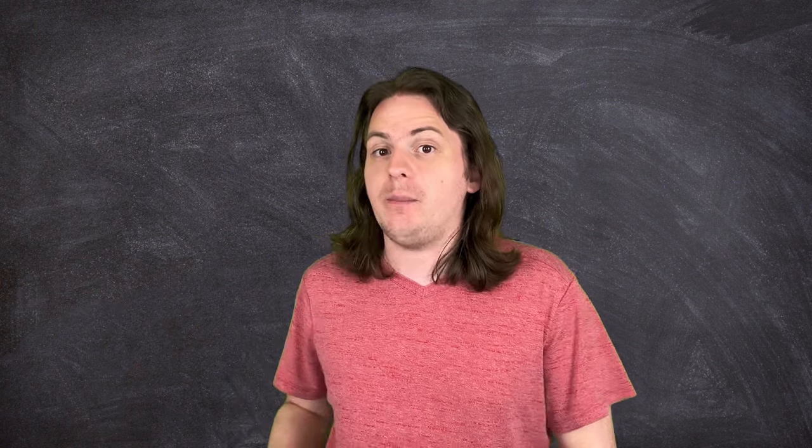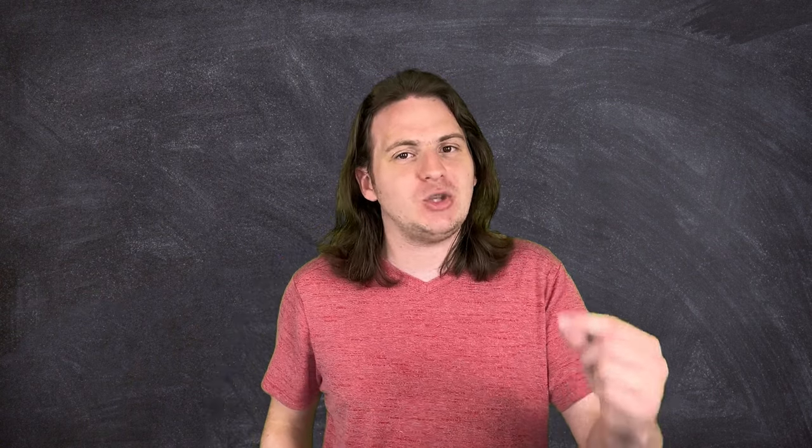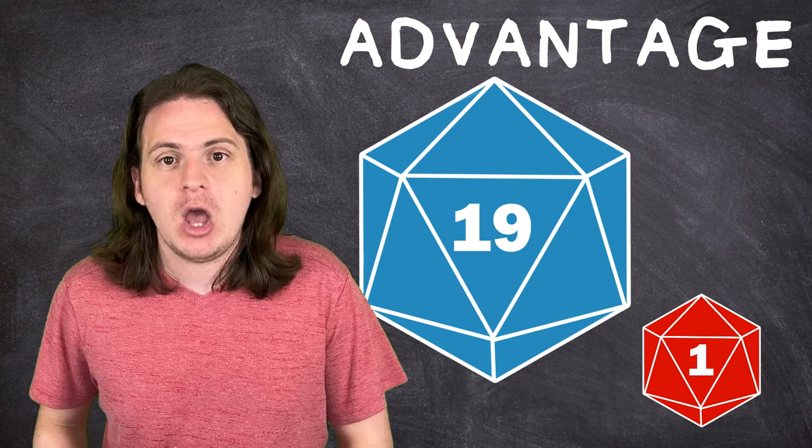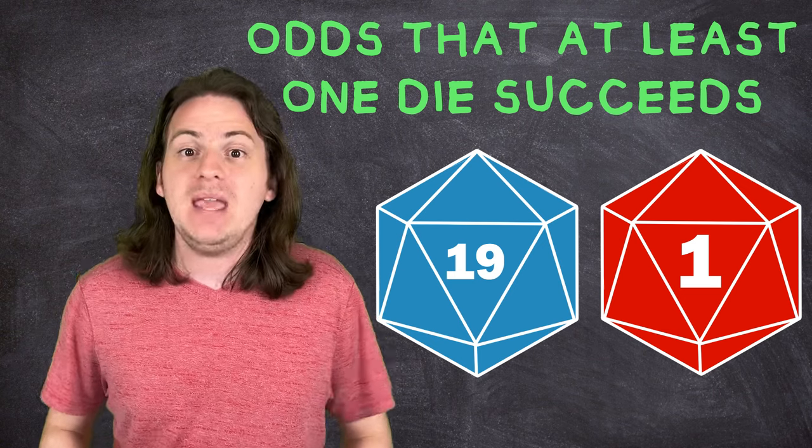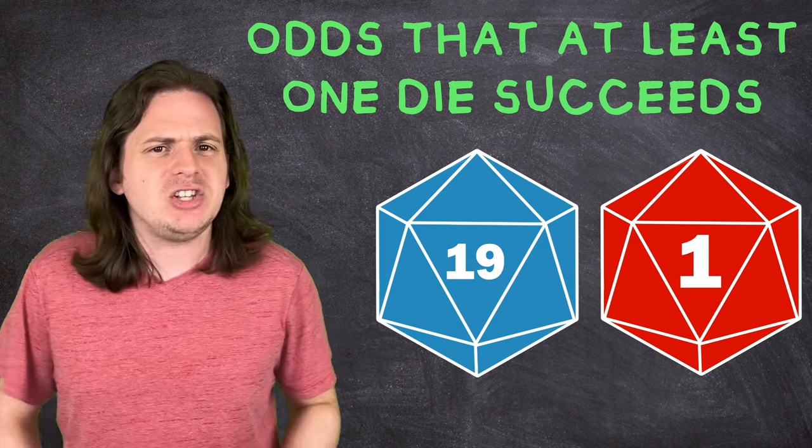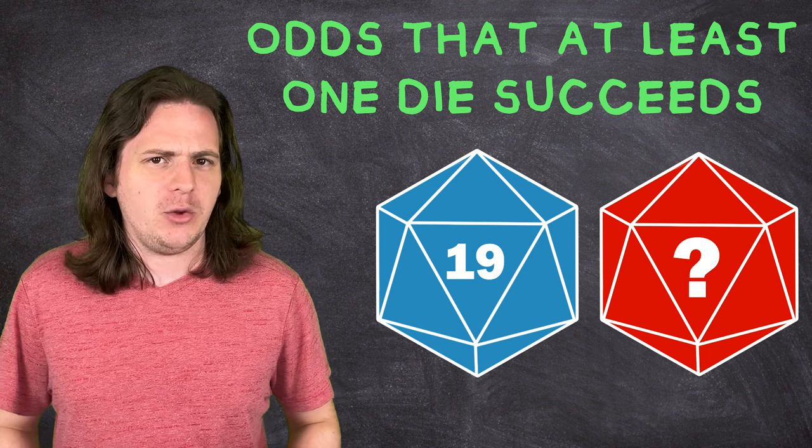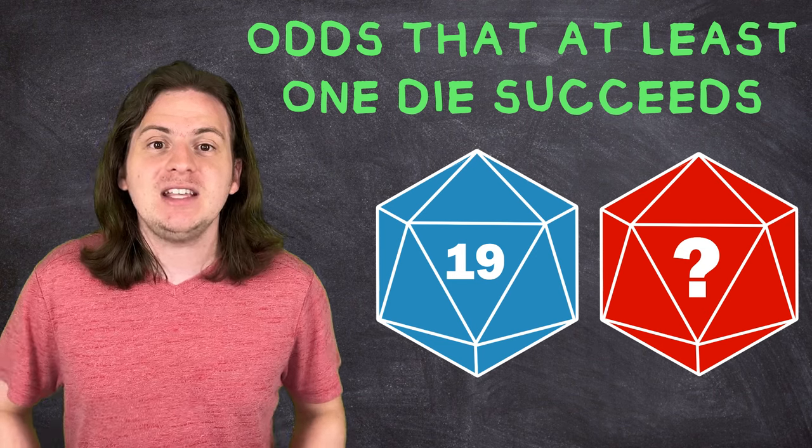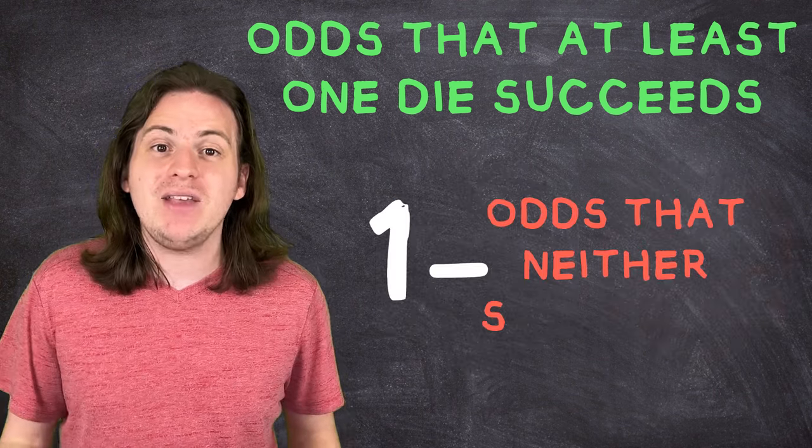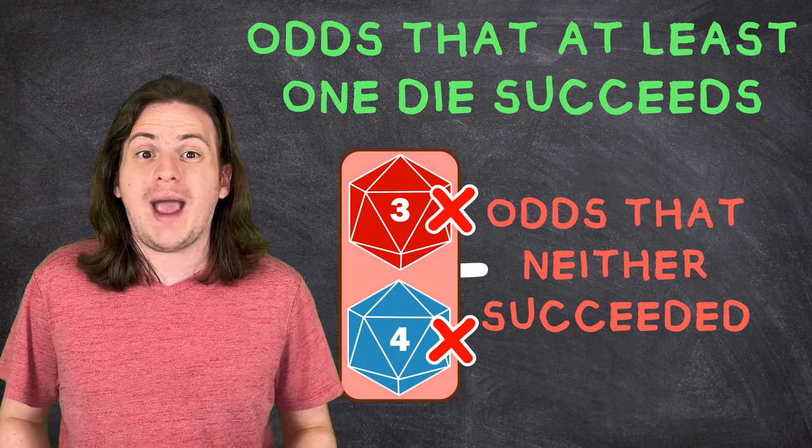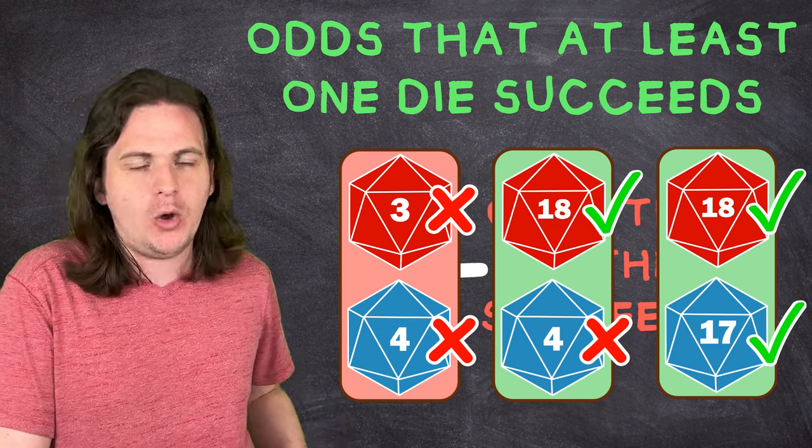Now we just need to do the same thing for rolling with advantage instead of a bonus, and we can easily compare the two to see which one gives you the better chance of succeeding. Now obviously, adding in a second die makes things a bit trickier, but in essence, since we're always choosing the higher of the two dice, we're looking for the odds that at least one of them meets or beats the target number. You don't get anything special for rolling two really high numbers. As long as one of the dice succeeds, it doesn't matter what the other one is. In statistics, the way we do something like this is simply 1 minus the odds that neither dice hit the target, since those are the only two possible scenarios. Either none of them succeeded or at least one of them succeeded. Maybe just one, maybe both. Again, it doesn't matter.